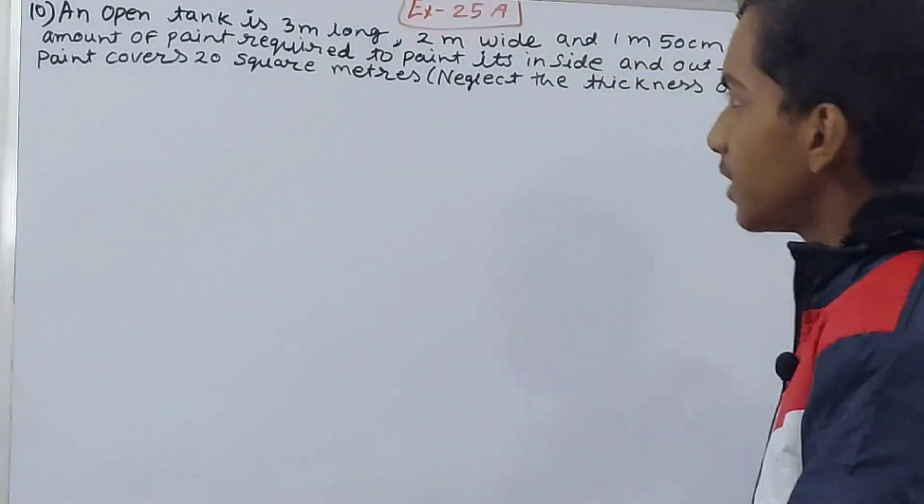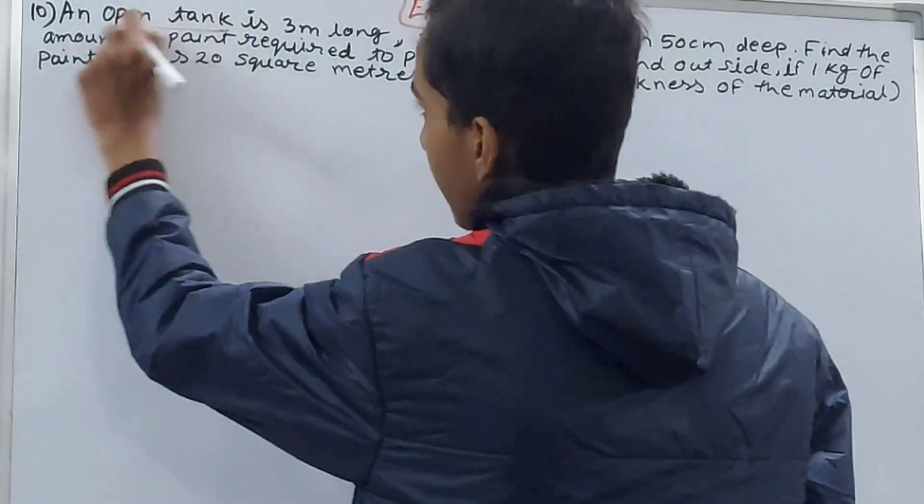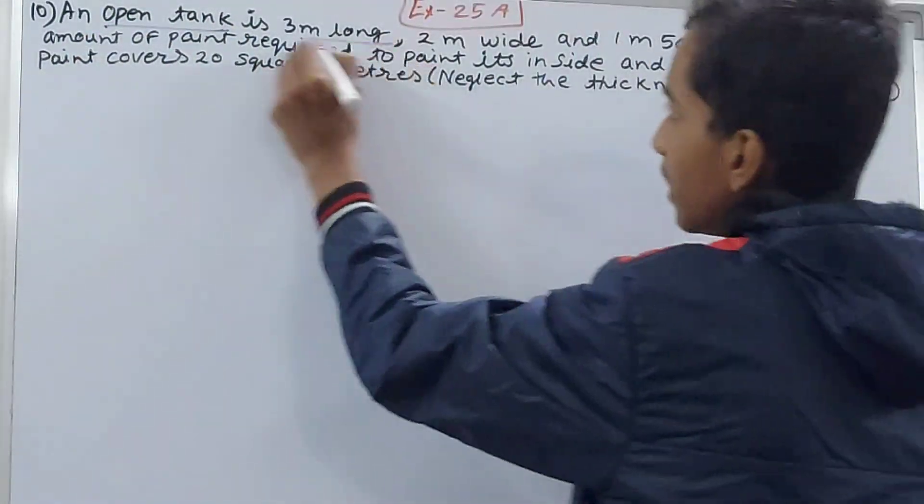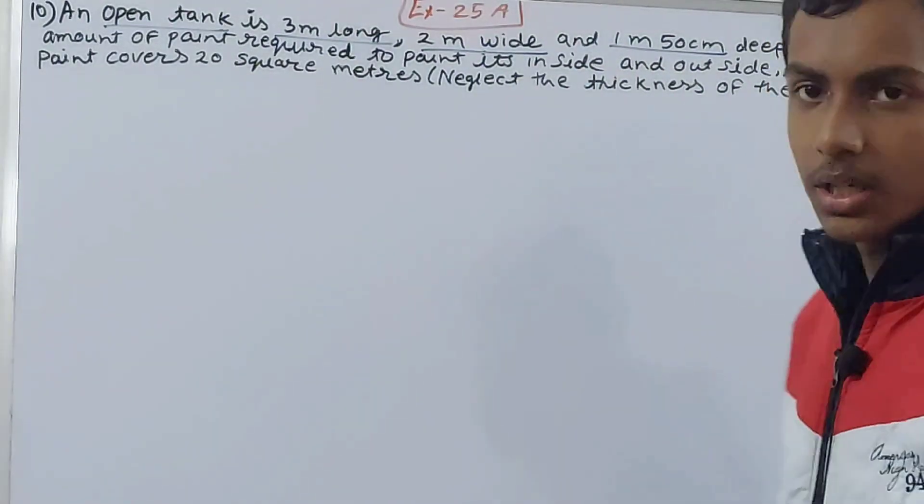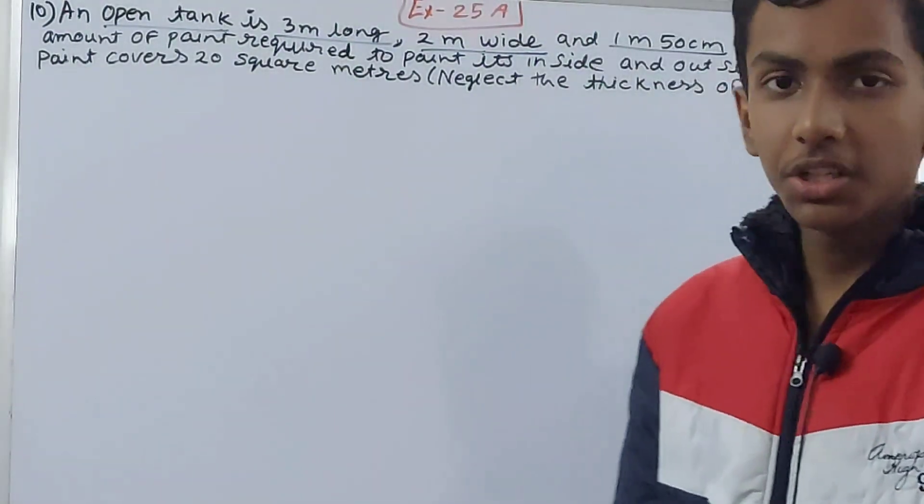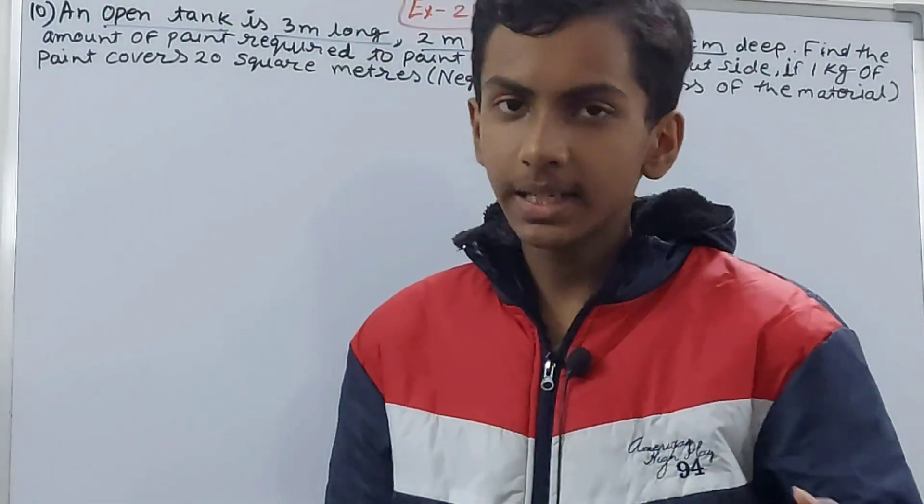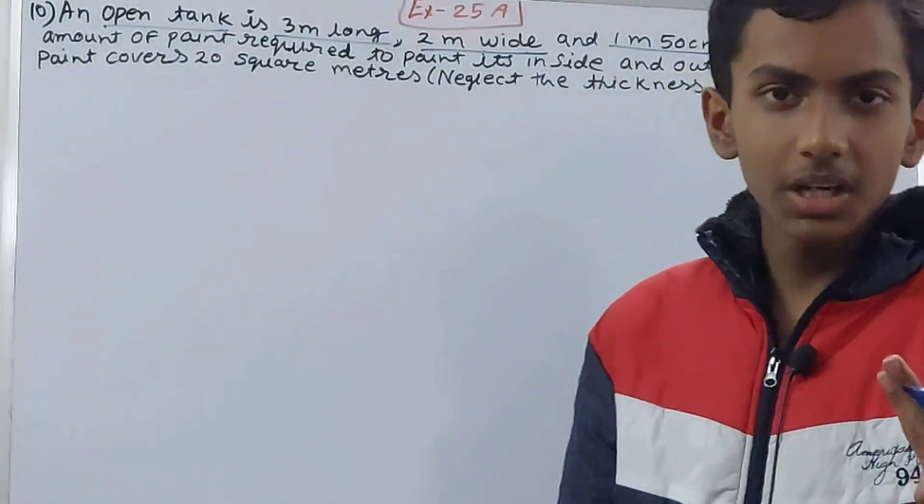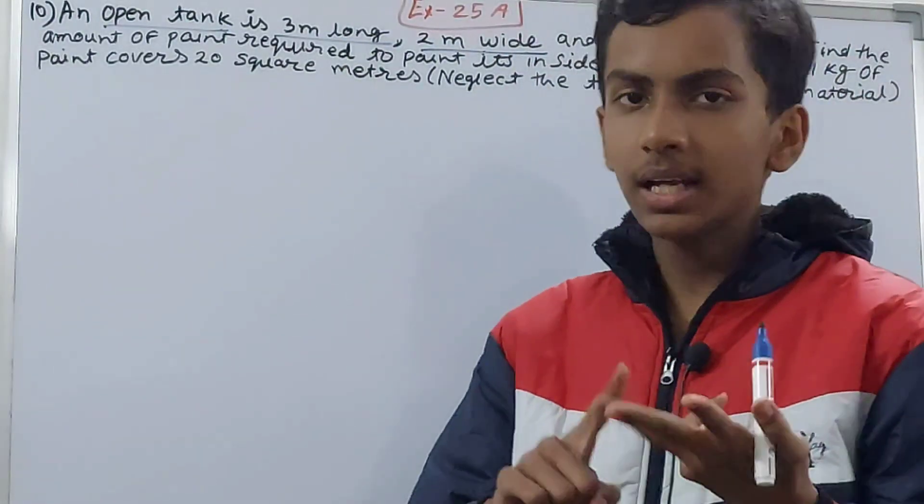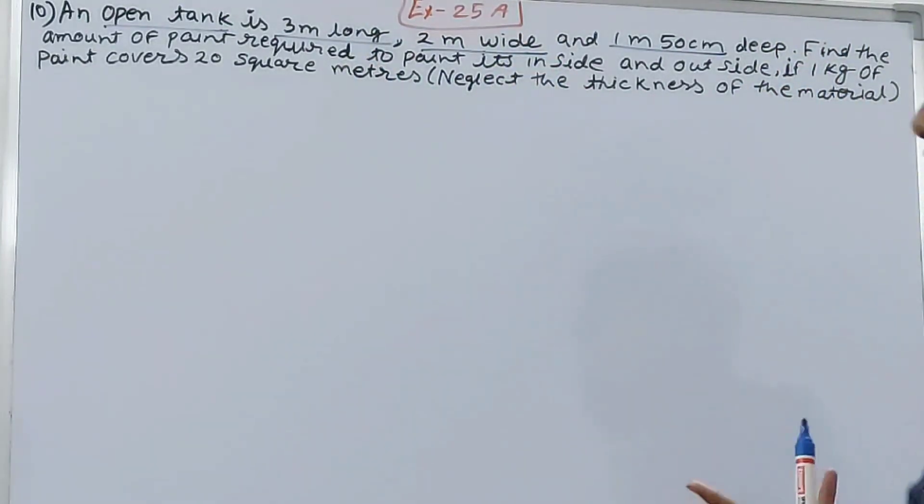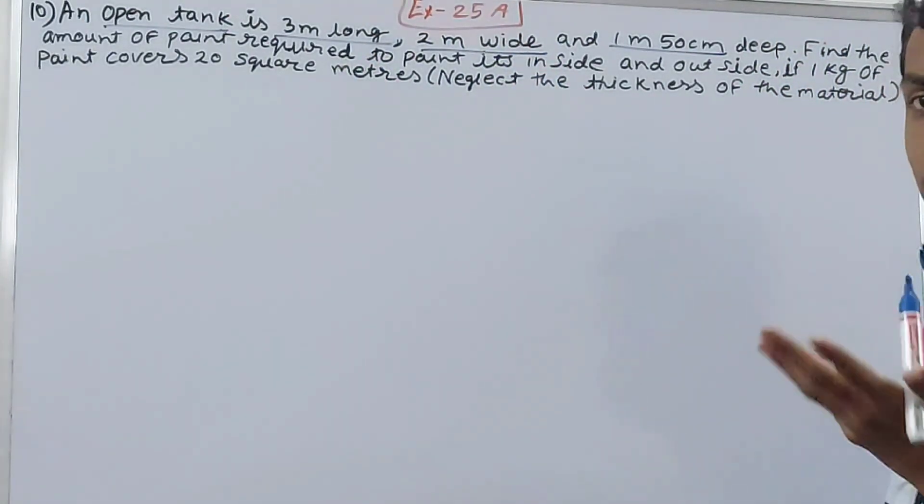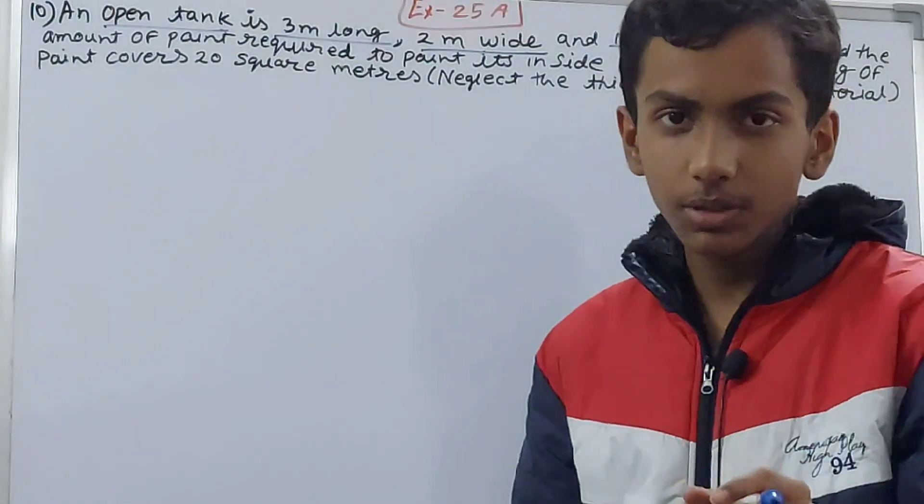You can take the example of the room in which you are sitting: 1, 2, 3, 4 - four sides and one floor. So total how many sides? 5 sides in this open tank. Now it is saying it is 3 meters long, 2 meters wide, 1 meter 50 centimeters deep. We have studied 3D shapes - they have three dimensions: length, breadth, and height. So length is 3 meters, breadth is 2 meters, height is 1 meter 50 centimeters.